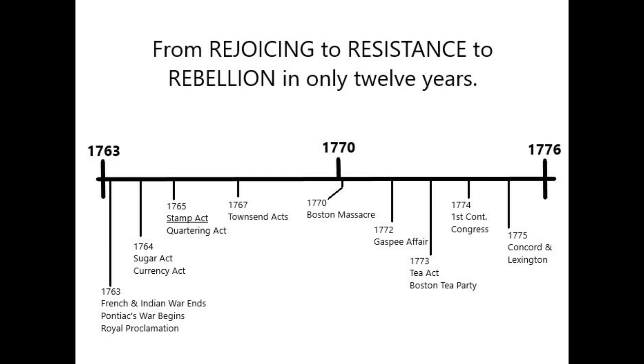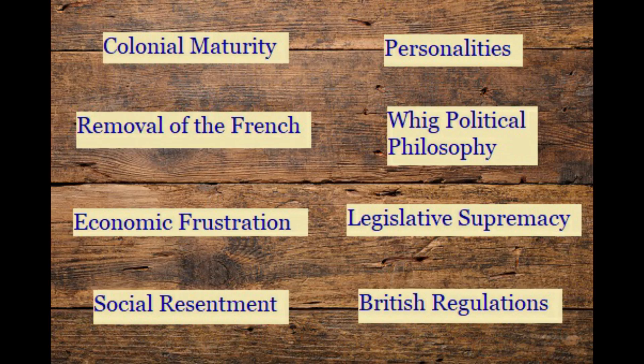So why did the colonies revolt? I think one of the most difficult things a historian has to do is to explain why an event or events happened — partly because it requires trying to discern people's motives and interests. I think there were eight factors that led to the colonial rebellion against the mother country. I'm not sure if some of these factors carry more weight than the others, but the eight factors I'm going to list are: colonial maturity, removal of the French, economic frustration, social resentment, personalities, Whig political philosophy, legislative supremacy, and British regulations, which include taxes.